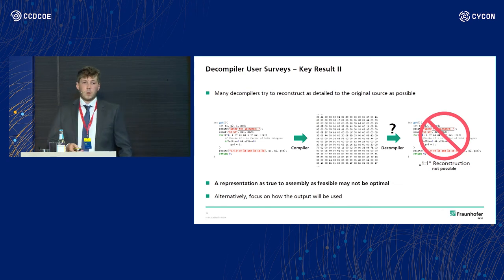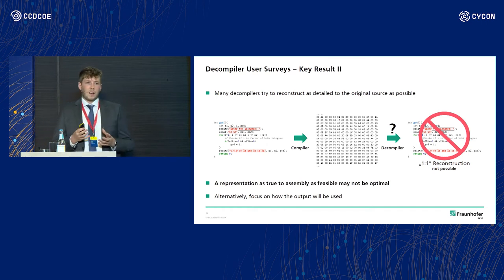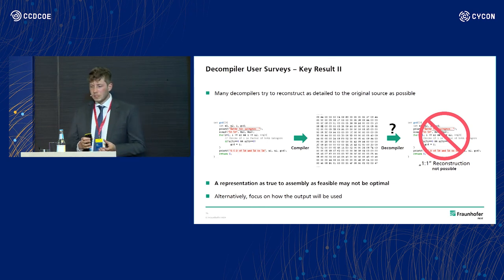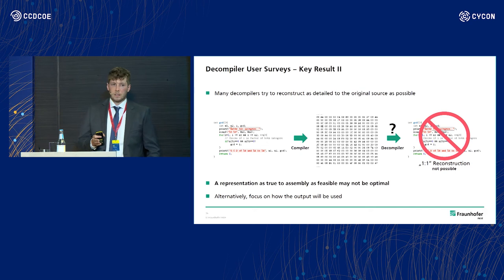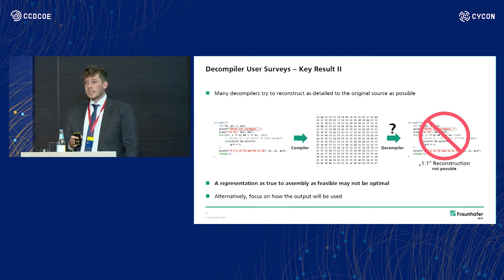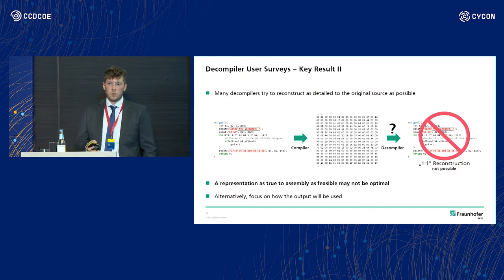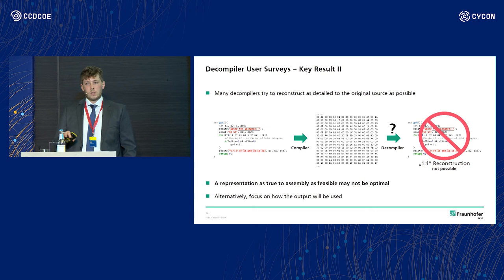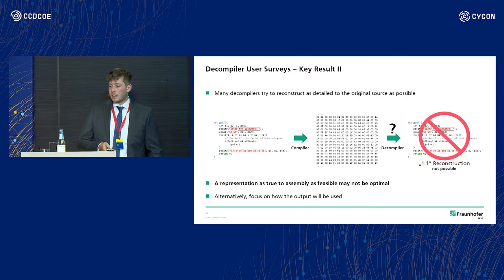The second key result we observed is that right now many decompilers try to reconstruct the original source code as best they can. However, this isn't always what we want, because the compilation process has a heavy information loss — a real one-to-one reconstruction isn't even possible, so why bother trying? Instead, what decompilers should do is focus on how the output is used and then try to come up with the best representation for it. Right now they try to stick to assembly very much, but this may just not be optimal.